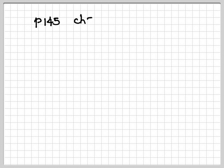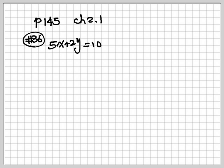Let's go to page 145, section 2.1. Let's look at number 36. We have 5x plus 2y is equal to 10. Right now, they give us in standard form. We want to put everything into the slope-intercept form. Slope-intercept form is y is equal to mx plus b.